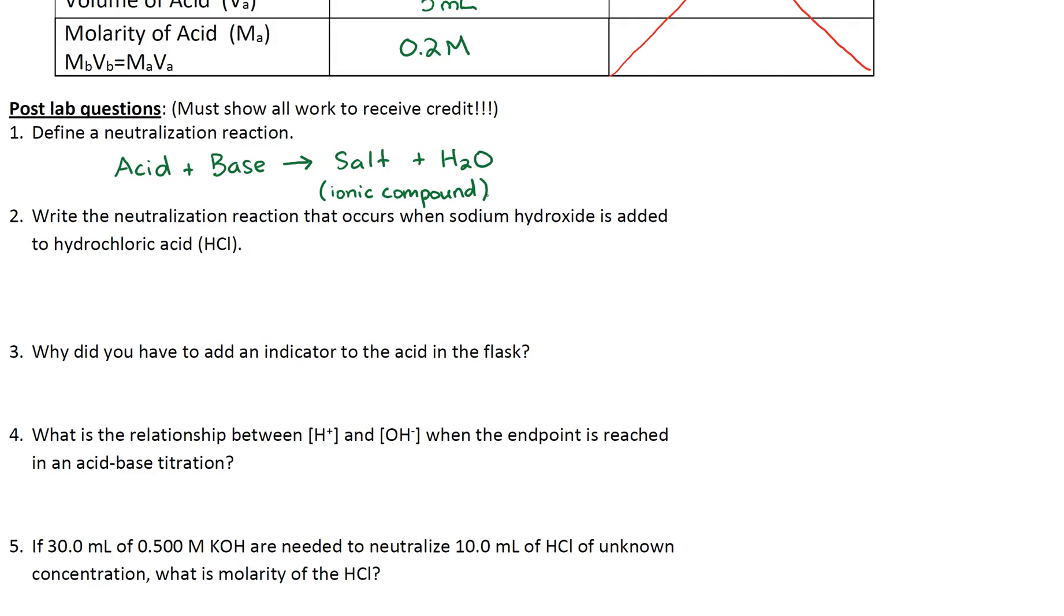Write the neutralization reaction that occurs when sodium hydroxide is added to hydrochloric acid. So in the format of acid plus base yields salt plus water, the acid in this case is HCl, base is NaOH, yields I'm simply switching my cation so now Na is paired up with Cl and then H is paired up with OH. And HOH is another way of writing H2O. I have my two hydrogens here. Okay, so it's just another way of writing H2O. It helps us with writing neutralization reactions so I recommend that you guys write it out as HOH.